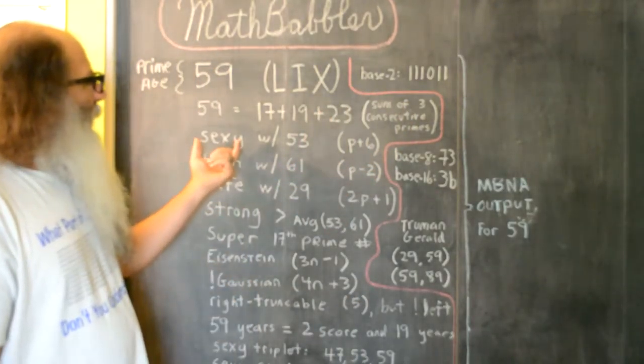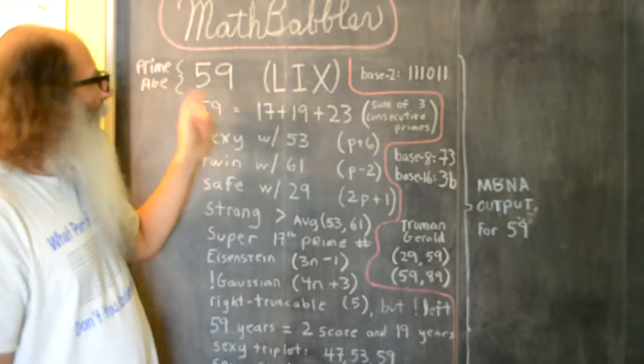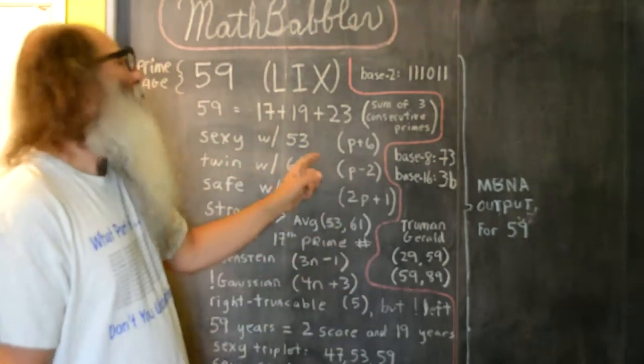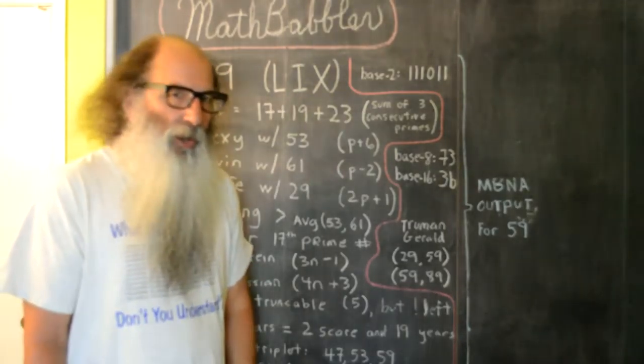59 is a sexy prime with 53. 53 is a prime number. 59 and 53 differ by 6, which makes them sexy primes.